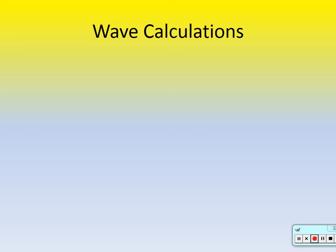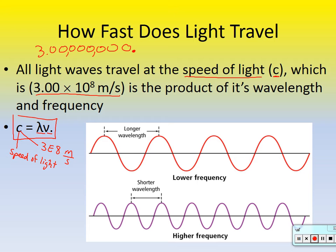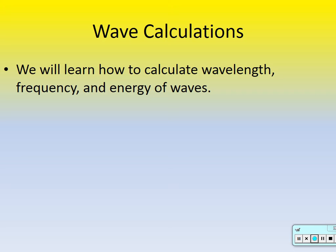Why are we talking about waves? Because light travels through the air as a wave. And why are we talking about it in this chapter? Because electrons are what emit light. So we've got to learn about waves. Wave calculations — we're going to learn how to calculate the wavelength, frequency, and energy of waves.